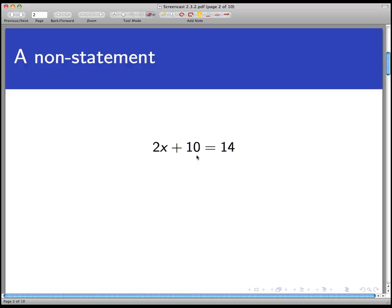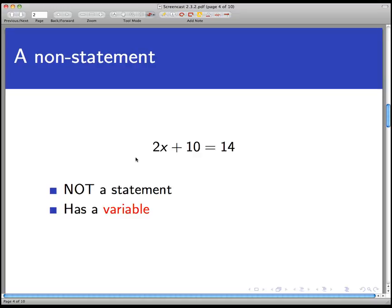And this equation right here, 2x + 10 = 14, is an example of the latter. It's a sentence that is not a statement. Now why is this not a statement? A statement is a well-formed declarative English sentence, which this is, but it has a definite true or false value to it. You can look at it and tell that it's true or false. This one we cannot determine the truth or falsehood value because of the variable.